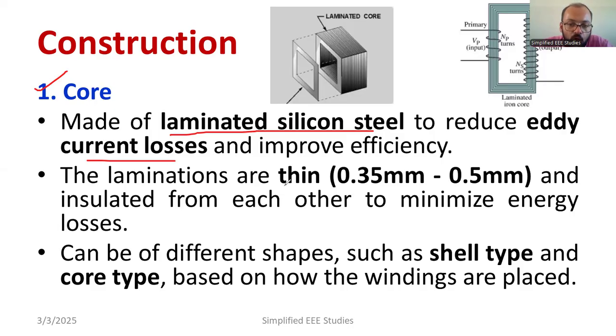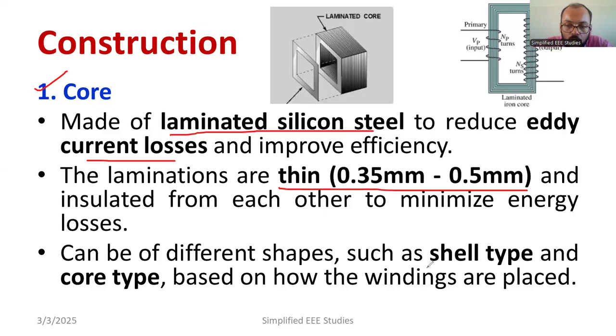If I talk about the thickness, it is very minute — 0.35 millimeters to 0.5 millimeters. There are two types of transformer core: one is the shell type transformer core, and the other is the core type.